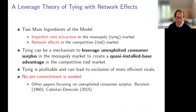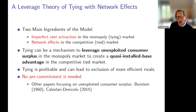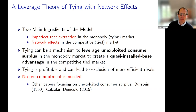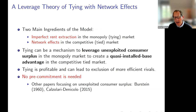The combination of these things is what we're going to show: tying can be a mechanism to leverage that unexploited consumer surplus in the monopoly market to create a quasi installed base advantage in the competitive tied market. You're going to have consumers who have information rents, and by tying you're going to get them to agree to buy your tied good. That's going to then get the bandwagon going in the tied good market and let you monopolize it even though you have an inferior good.